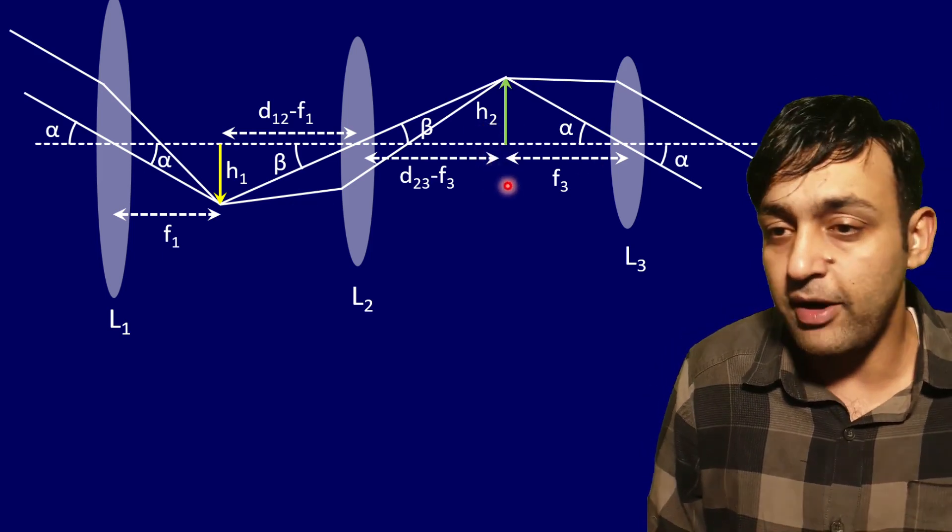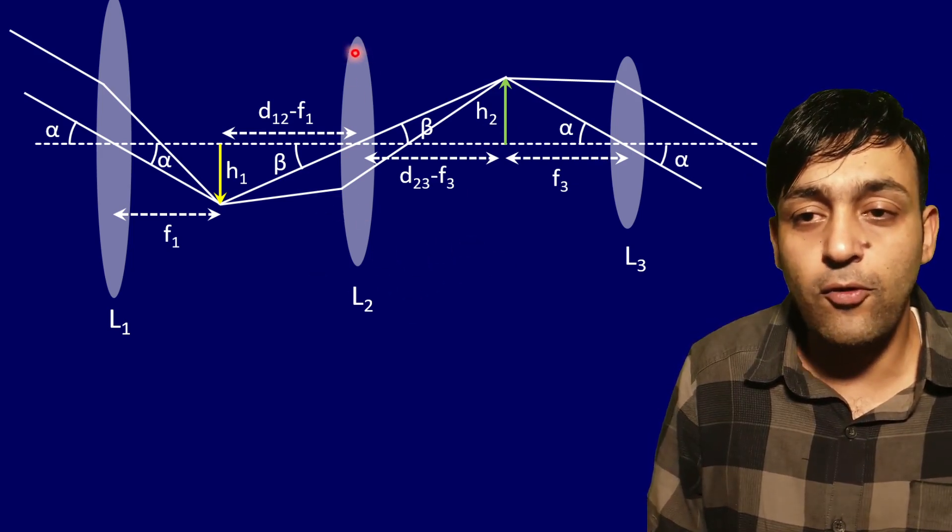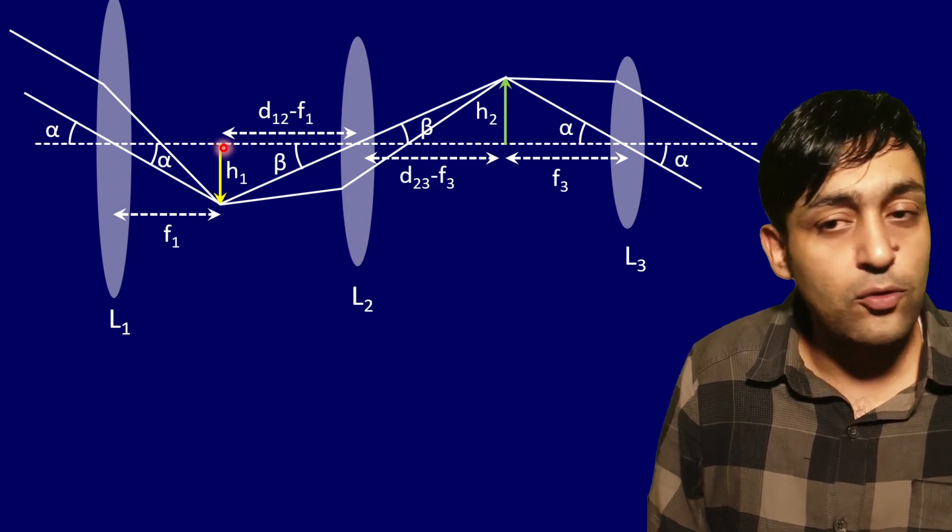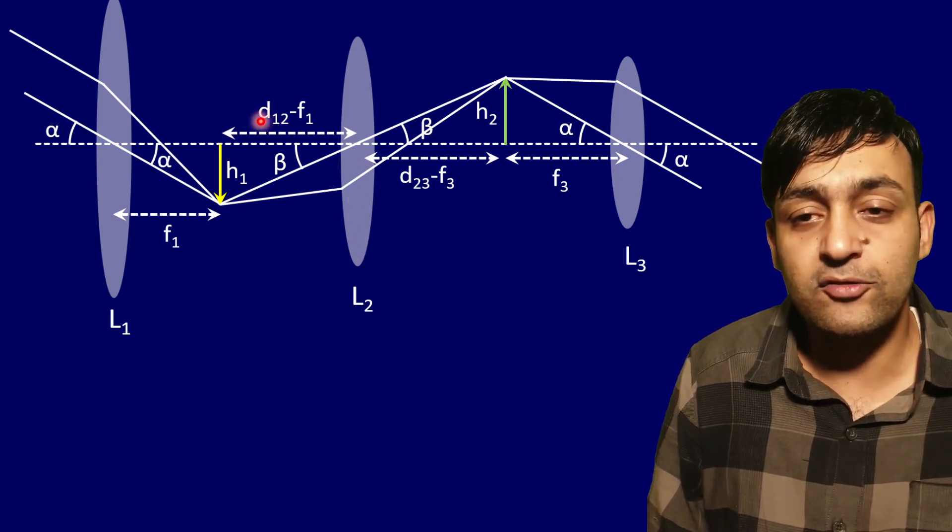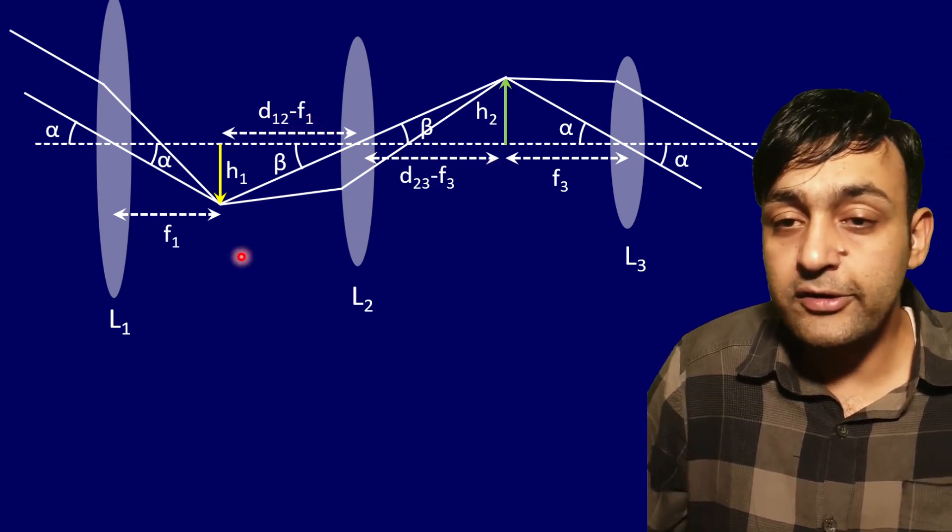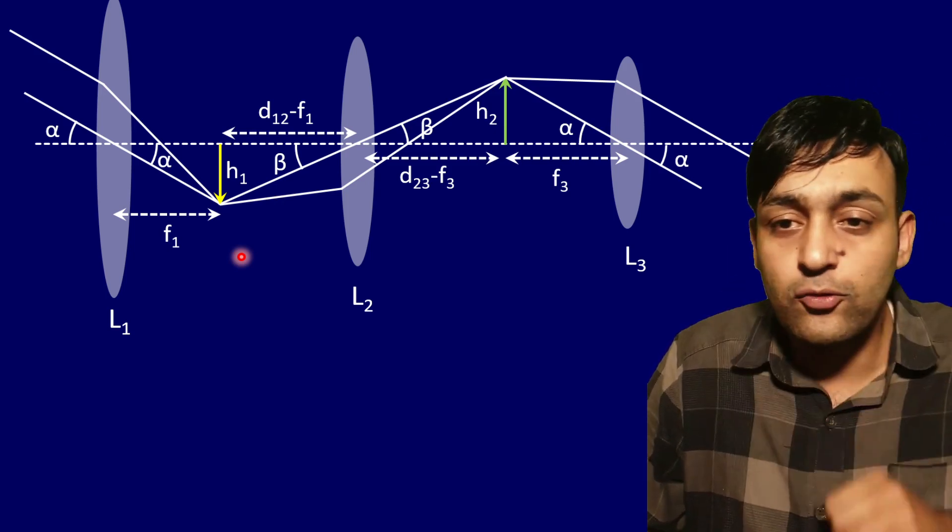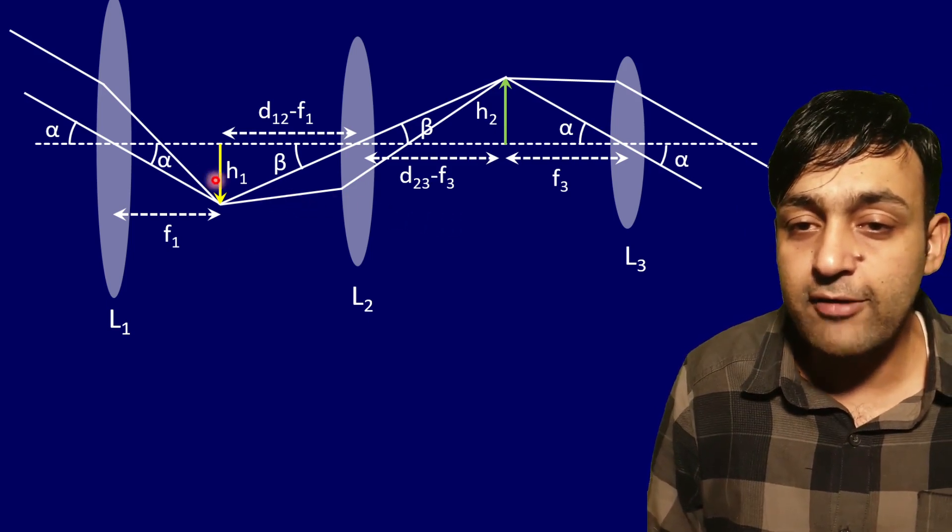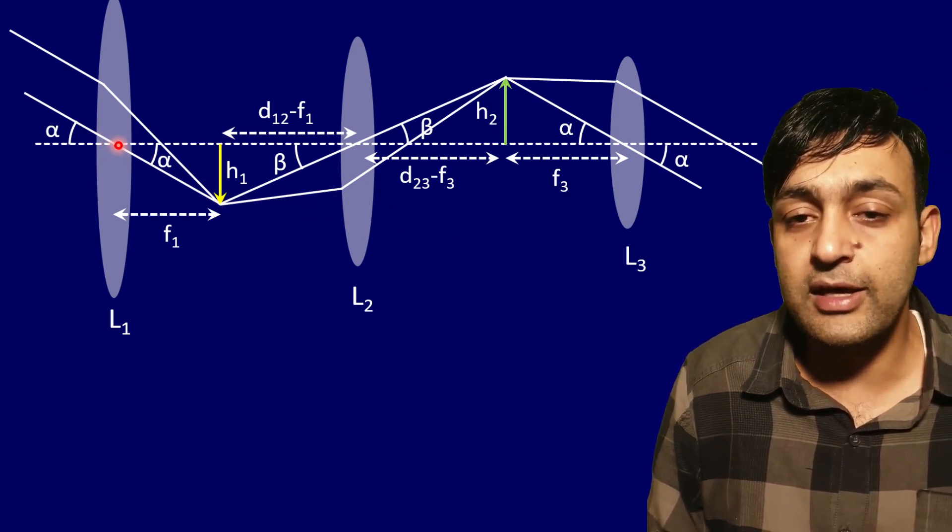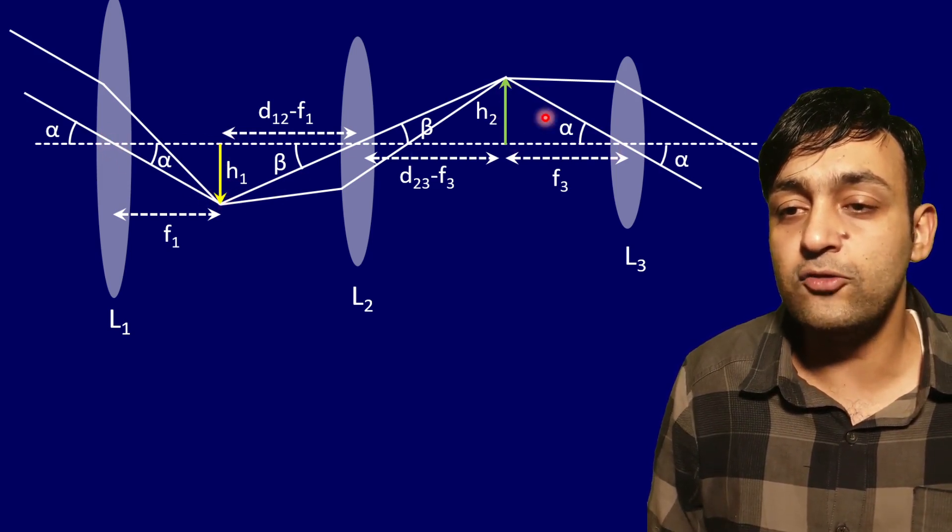One equation we can use is the lens equation for lens L2. We know the value of u, that is minus d12 minus f1, and we know the value of v. But we need one more equation because we have two variables and need at least two equations. The second equation will come from similar triangles. There is one triangle here and this triangle here - these two will be similar triangles because one angle is 90, one is alpha.